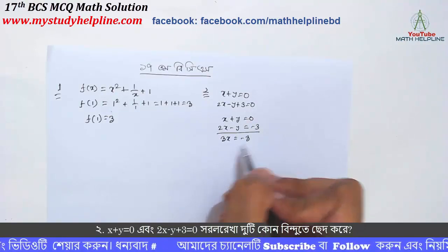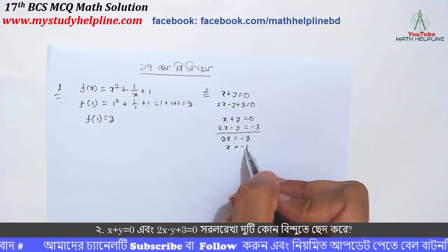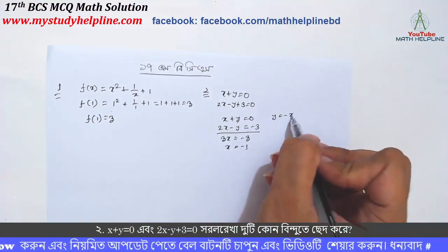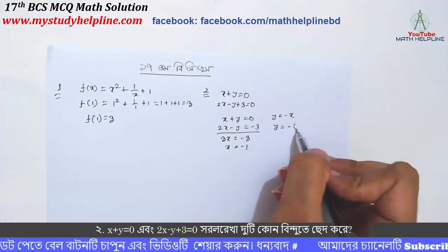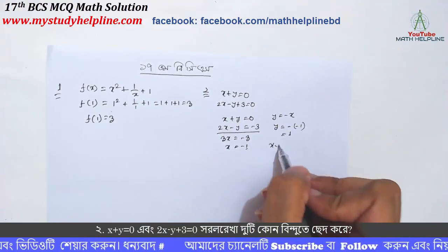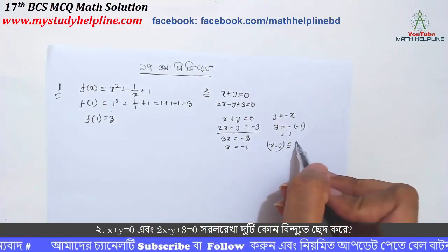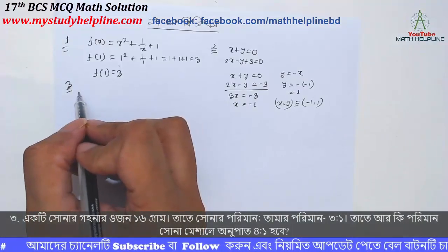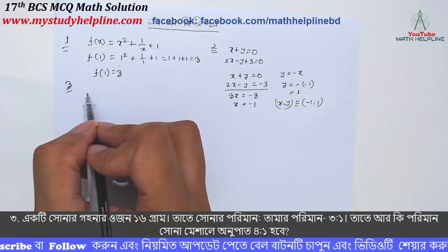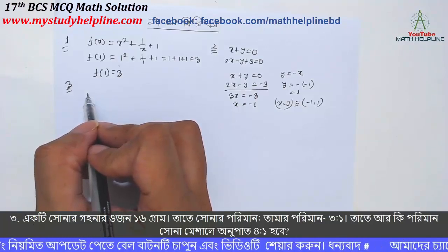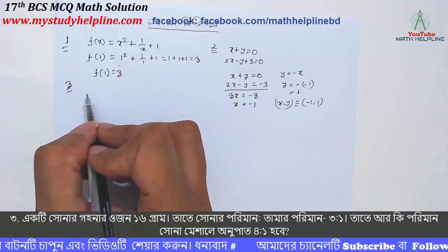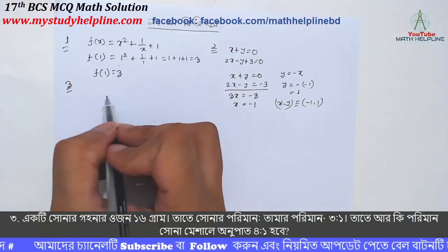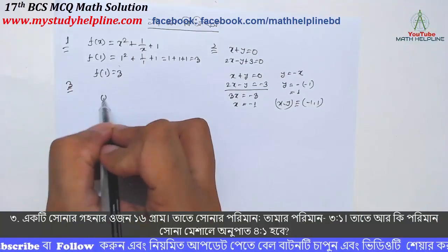x equals 0, x minus y plus 3 equals 0. તો y equal to minus x. x ના મૂલ્ય પ્રમાણે y equal to minus x plus 3. આ ક્ષેત્રે બોલ્યા આછે.